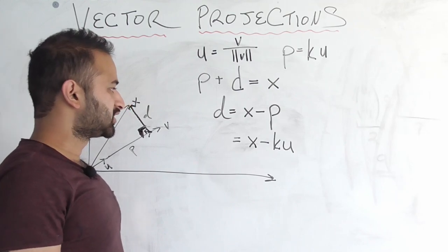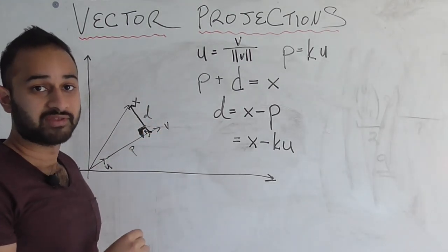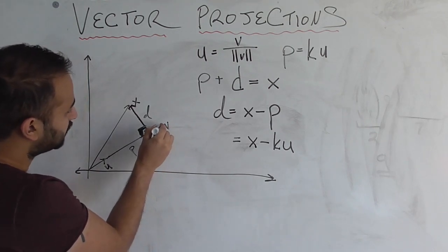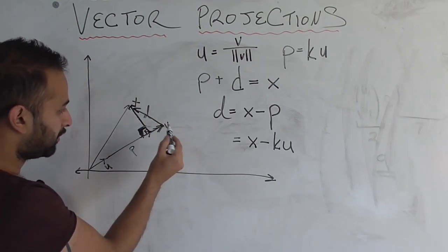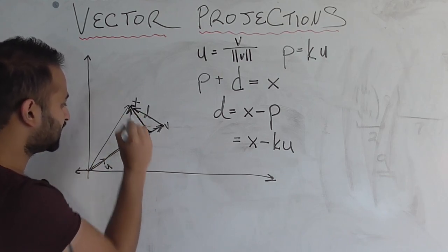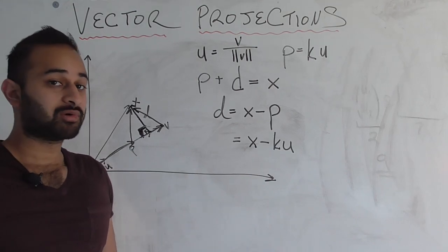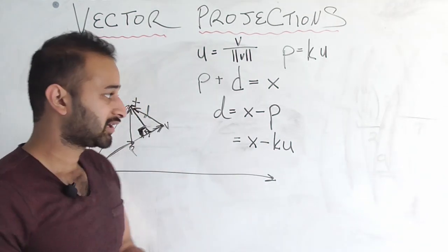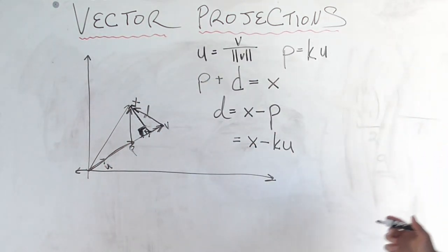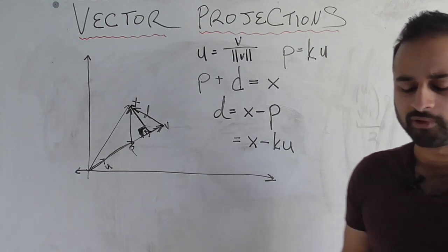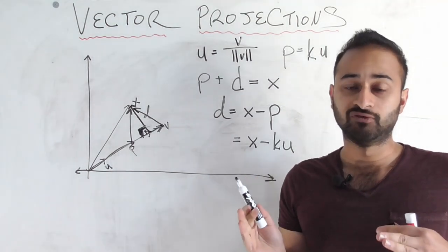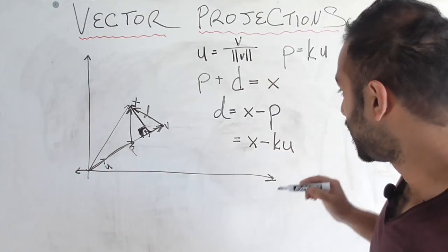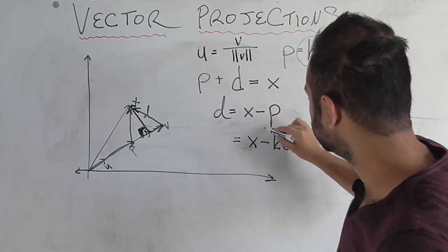They have to be perpendicular: if p were any longer or shorter than the actual projection, d would no longer be perpendicular to it. The only way the projection works out is if p and d are exactly perpendicular. We'll take advantage of this using the dot product, since the dot product of two vectors equals zero if and only if they are perpendicular.